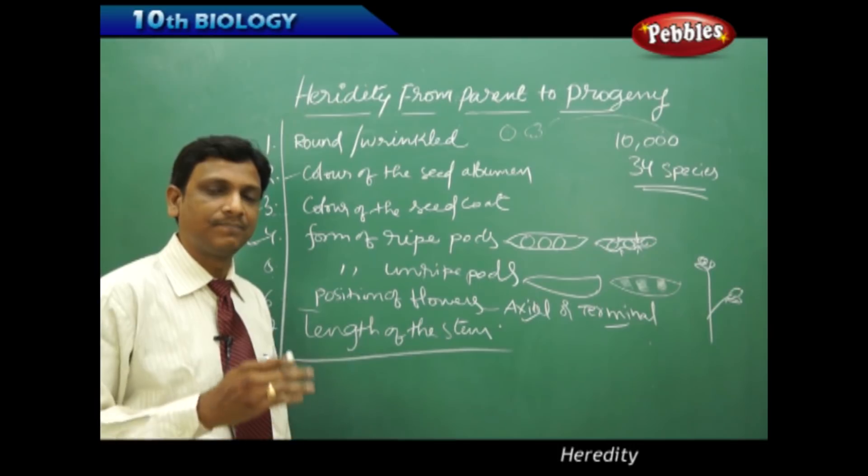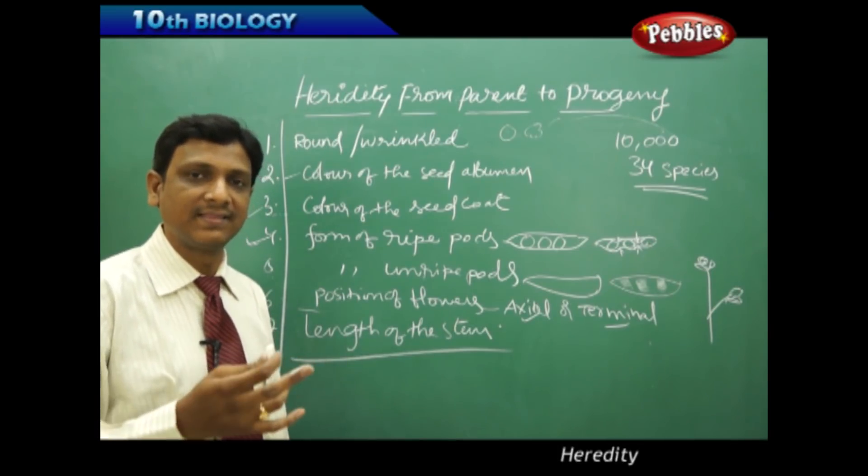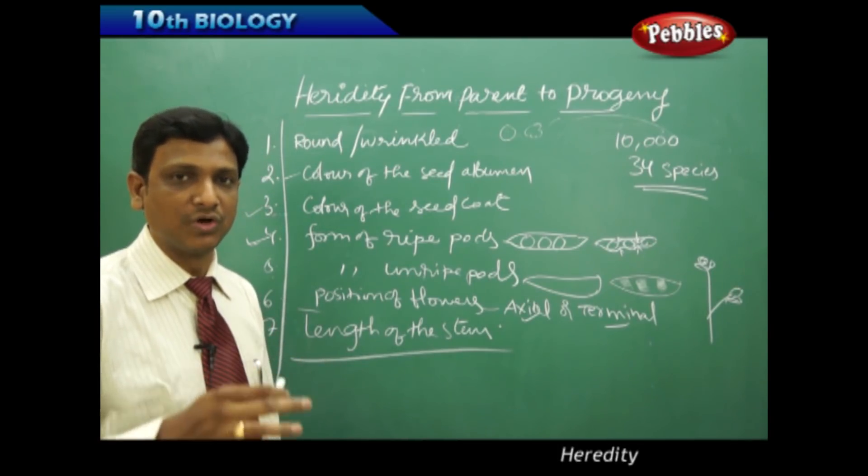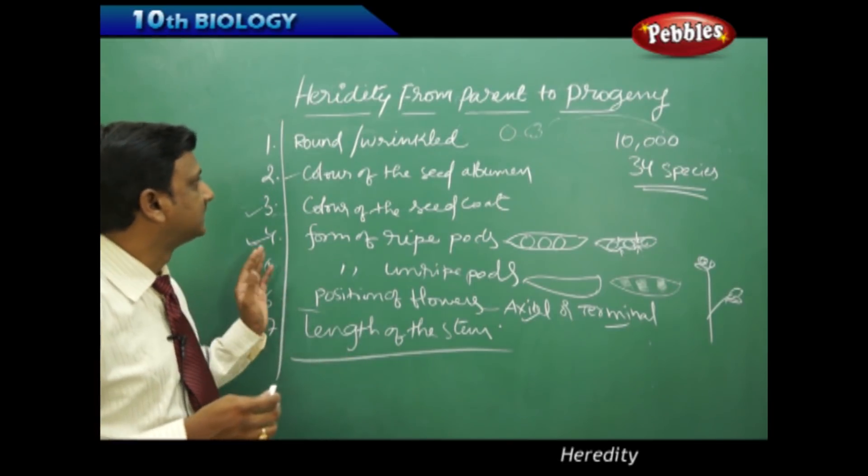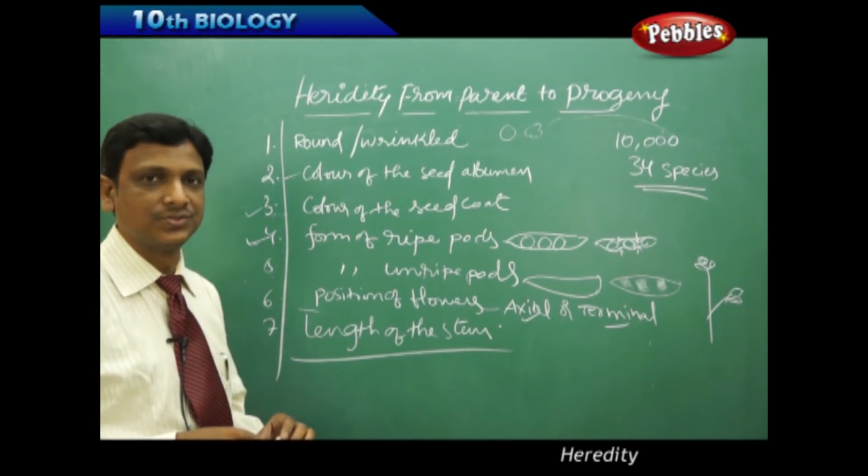In the length of the stem, the contrast character is the length - tall plant and dwarf plant. These are the seven characteristics which he has chosen.